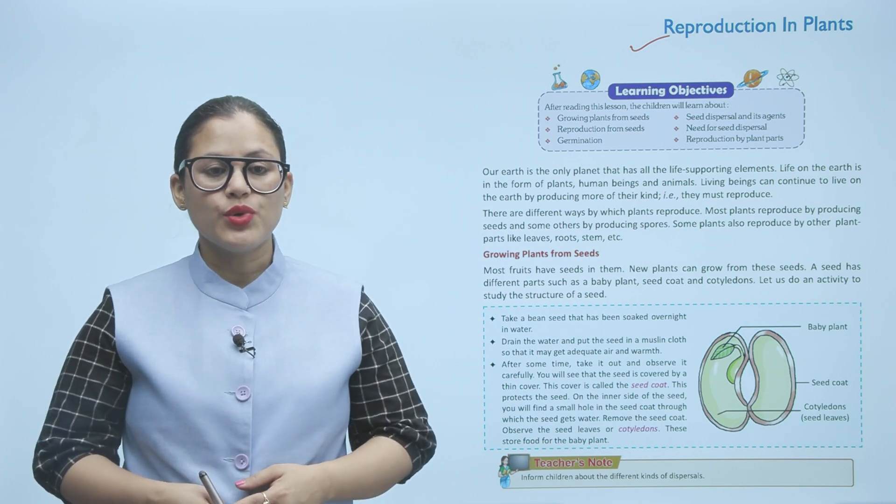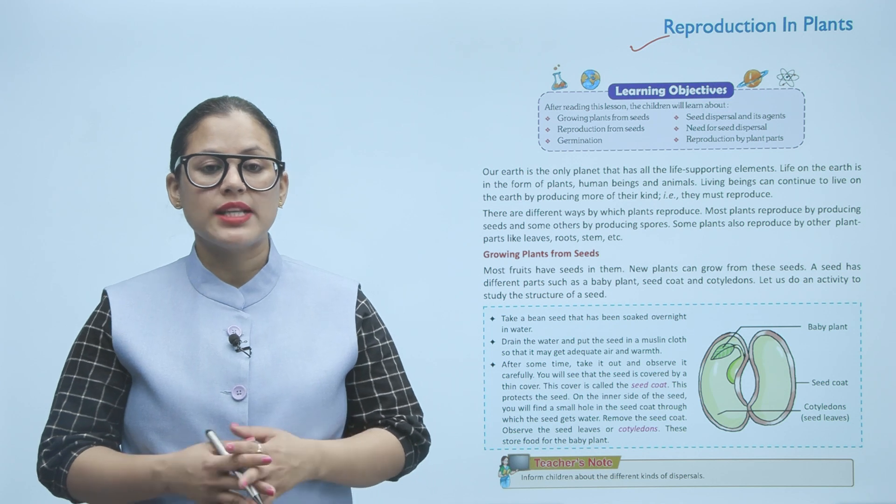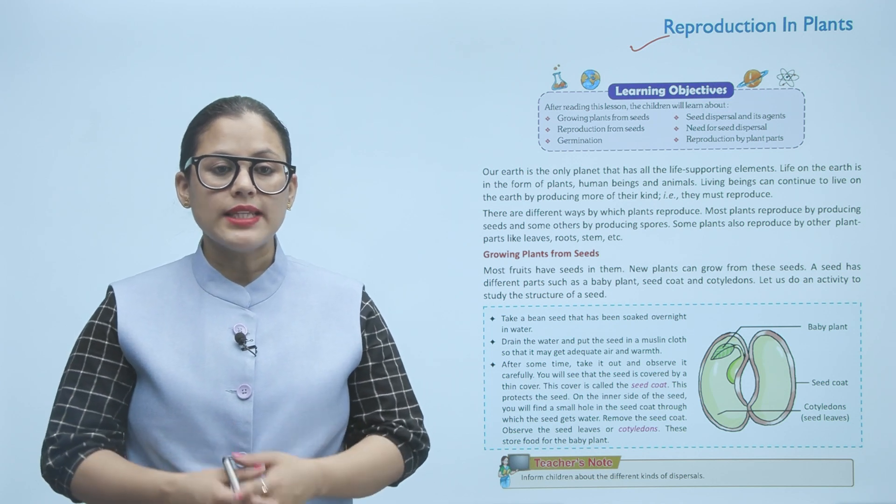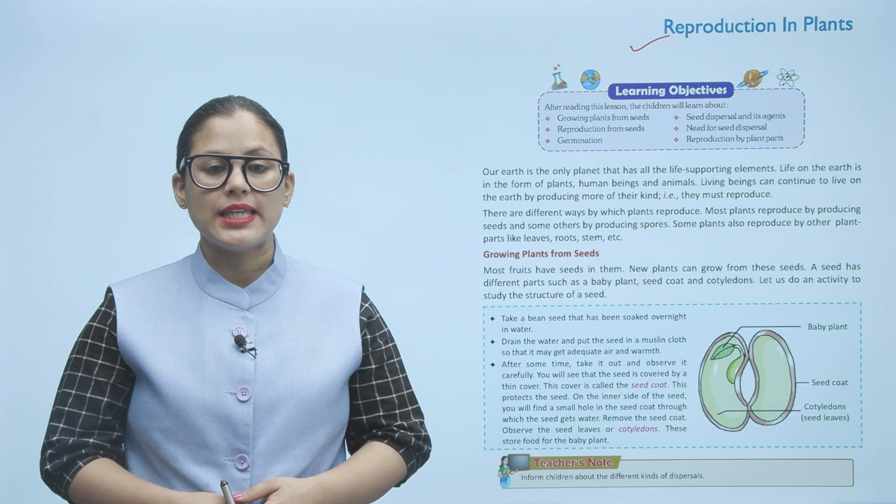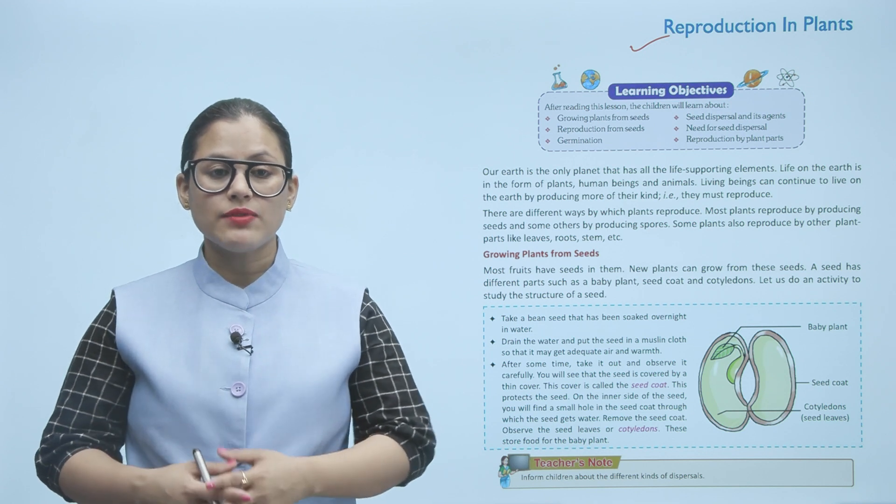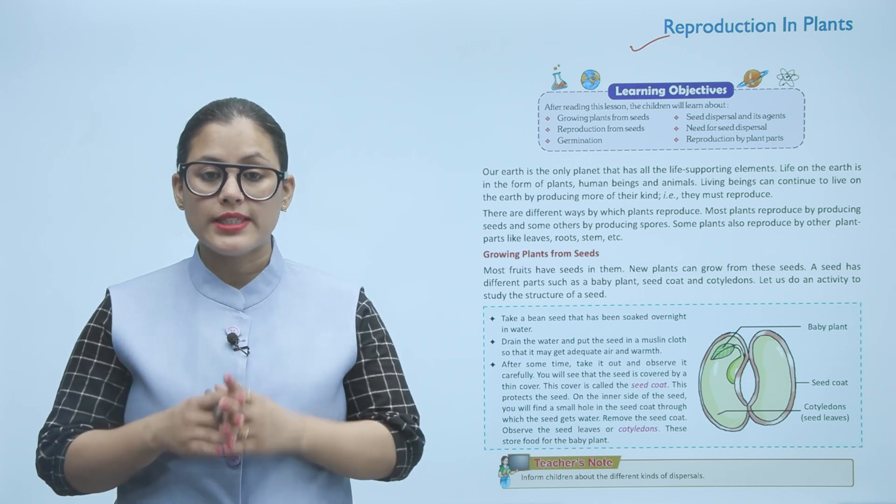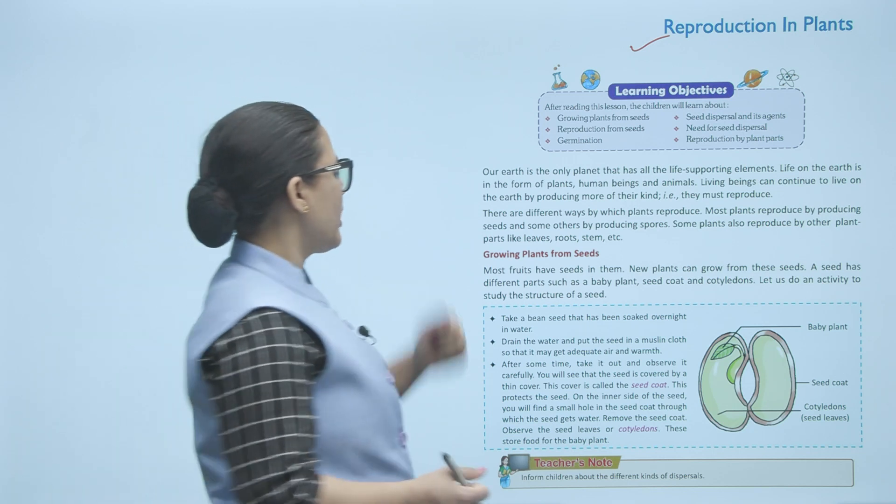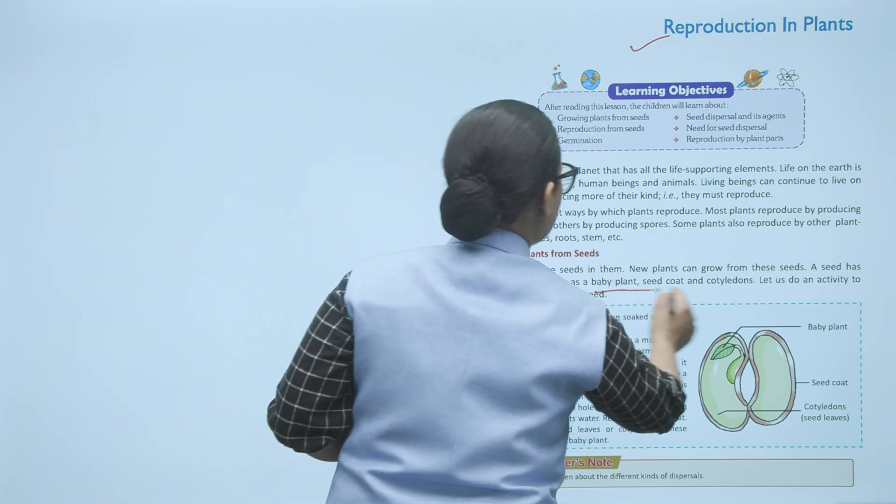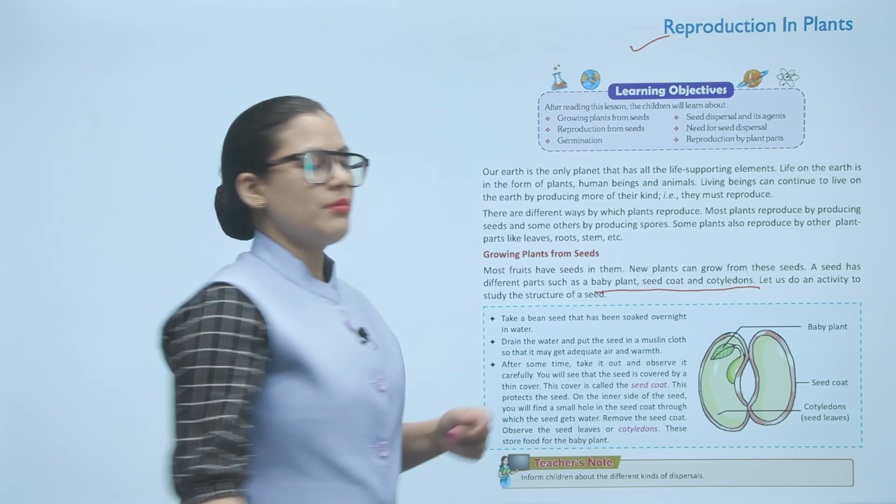Growing plants from seeds: Most fruits have seeds in them. New plants can grow from these seeds. A seed has different parts such as a baby plant, seed coat, and cotyledons. Let us do an activity to study the structure of a seed.